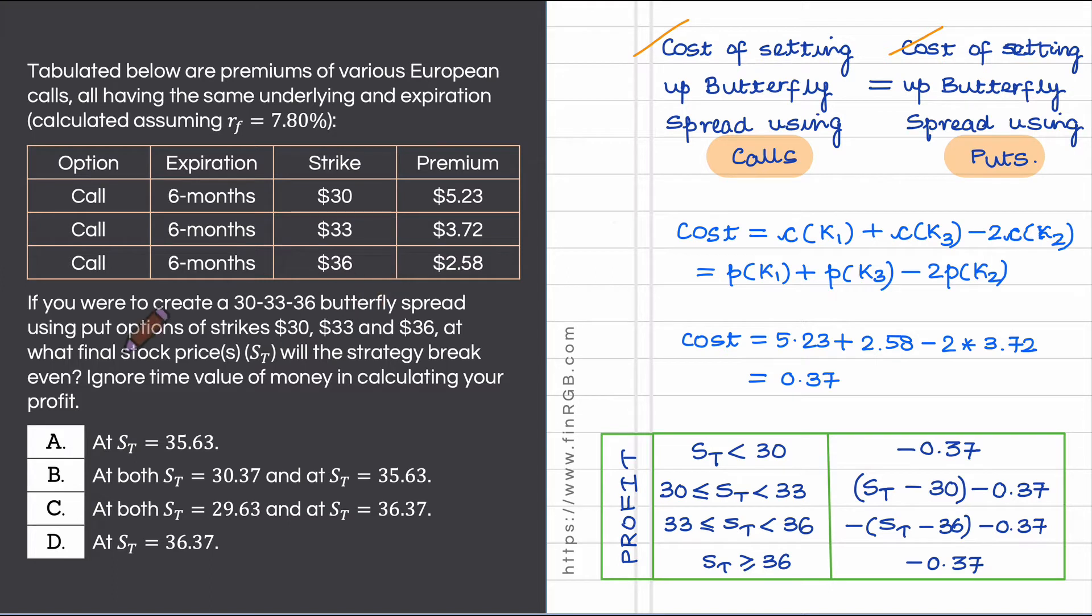Although our butterfly spread is using put options, we can calculate the cost of setting up this butterfly spread using call option premiums which are given to us in the question. Let me introduce my notation here: k1 let it be my low strike, k3 let it be my high strike and k2 let it be my intermediate strike.